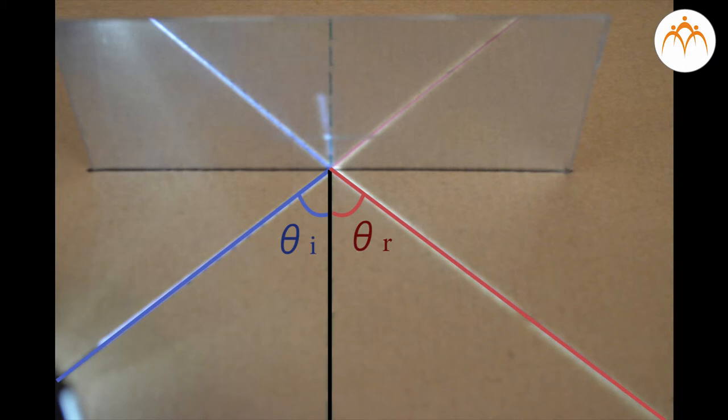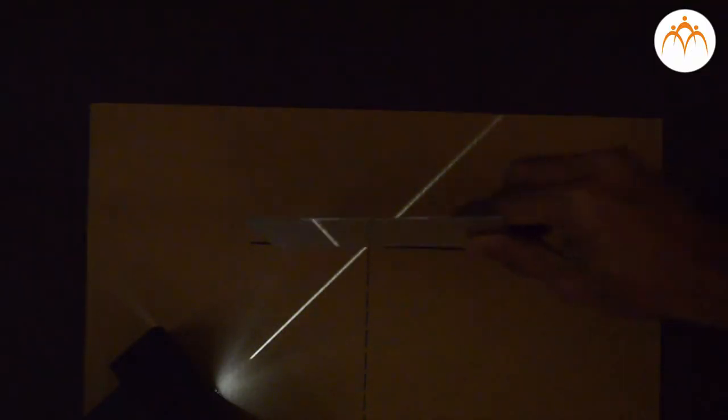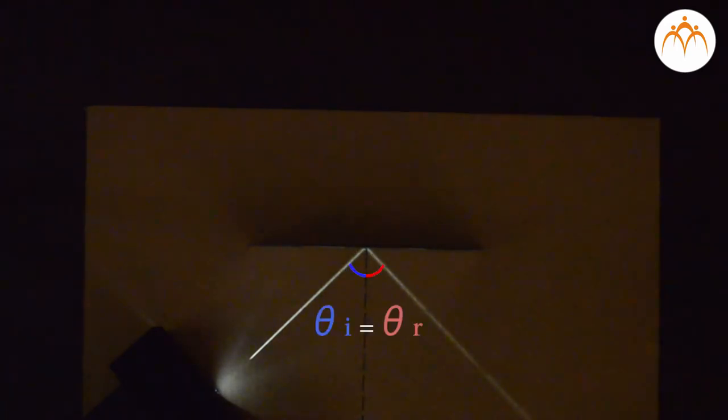These two angles are labeled with the Greek letter theta accompanied by a subscript, read as theta i for angle of incidence and theta r for angle of reflection. The law of reflection states that when a ray of light reflects from a surface, the angle of incidence is equal to the angle of reflection. We can see that the reflected ray and the incident ray are on the opposite sides of the normal and are in the same plane.